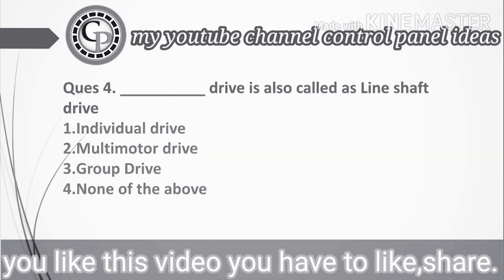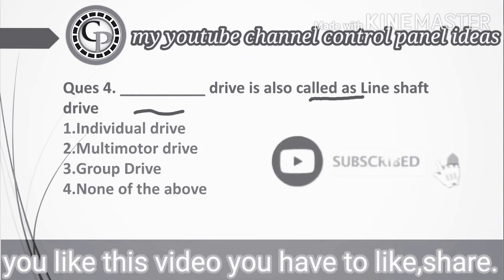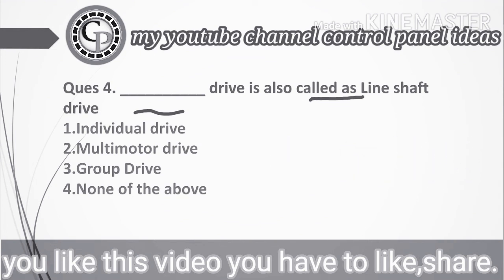Next question: A line shaft drive is also called as: point one, individual drive; point two, multi-motor drive; point three, group drive; point four, none of the above. The right option is point three — group drive.